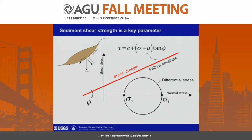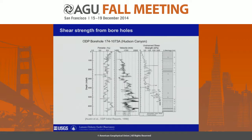One of the best seismic methods we have for getting at shear strength is to measure shear wave velocity. We'll talk about shear wave velocity in a second, but first of all we can actually measure shear strength in cores more directly.